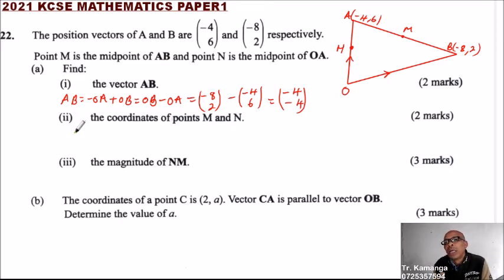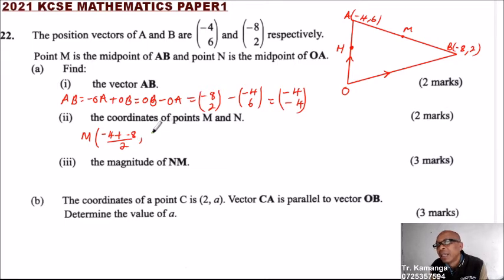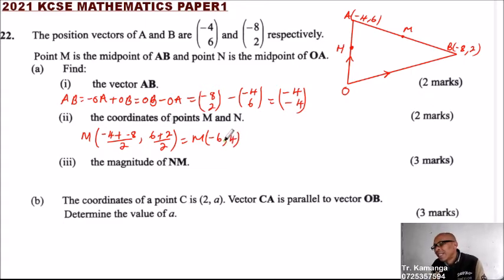Roman numeral two: the coordinates of midpoints M and N. For M, the midpoint of AB, we use the midpoint formula: x = (-4 + -8) / 2 and y = (6 + 2) / 2. This gives M = (-12/2, 8/2) = (-6, 4). Those are the coordinates of M.